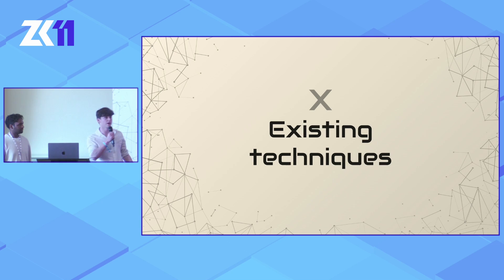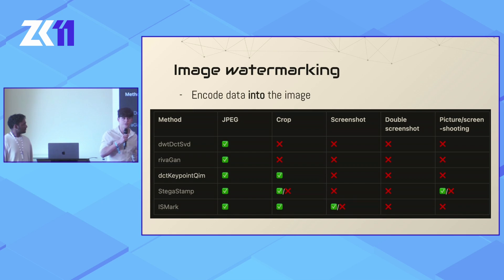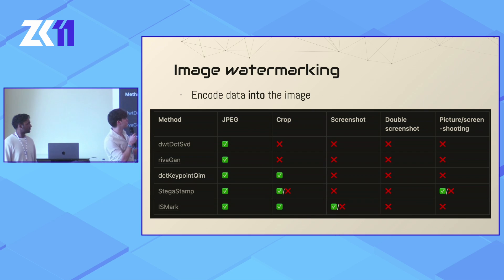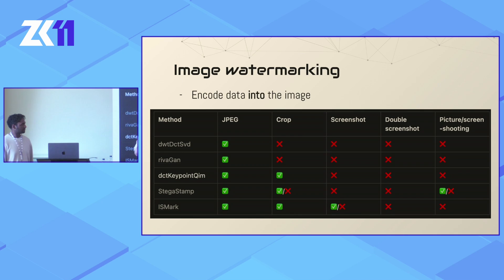So how are people currently thinking about data provenance and tracking content throughout the web? The most obvious thing is to encode that information directly into an image's pixels, the frequency domain of an image, or even some latent representation of the image. The issue is that in real-world settings, transformations like JPEG compression, crops, screenshots, or taking a picture with your phone corrupt the data representation of the image so much that any watermark is lost.